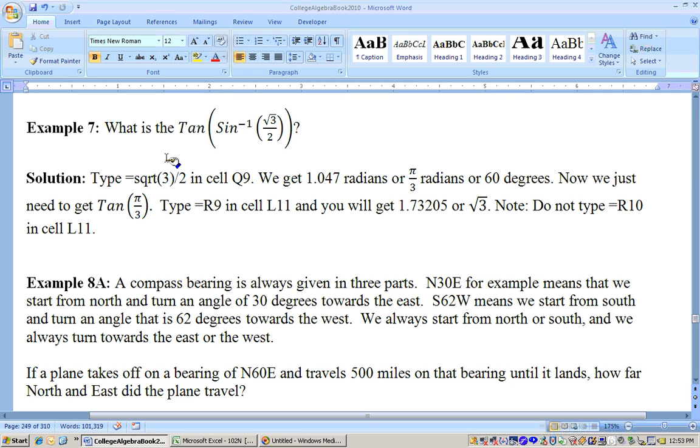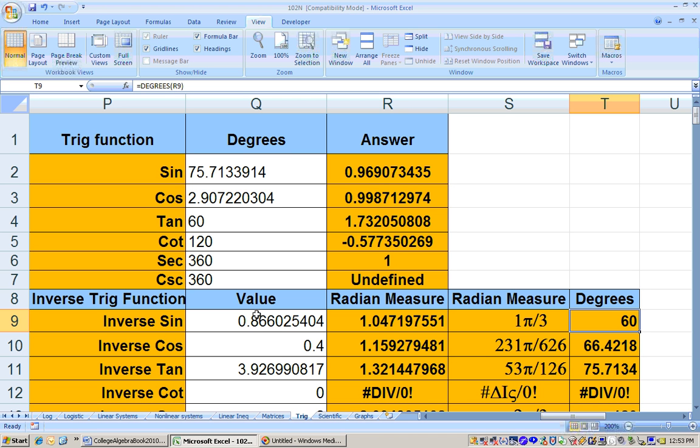Okay, before I go on to the next example, I want to look at the last example from the last video. And I said, what is the tangent of the inverse sine of the square root of 3 over 2? Well, we did that by putting in the square root of 3 over 2 here and taking the inverse sine of it and we get 60 degrees.